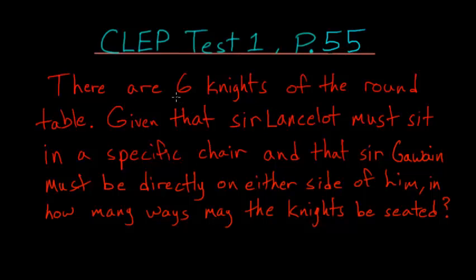In this word problem, there are six knights of the round table. Given that Sir Lancelot must sit in a specific chair, and that Sir Gawain must be directly on either side of him, in how many ways may the knights be seated?